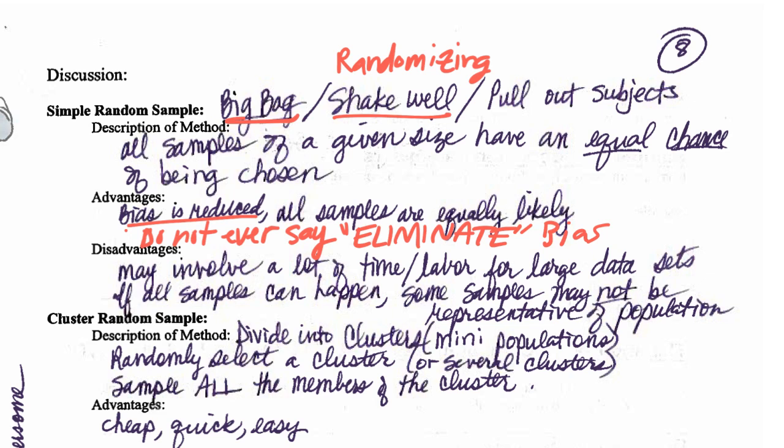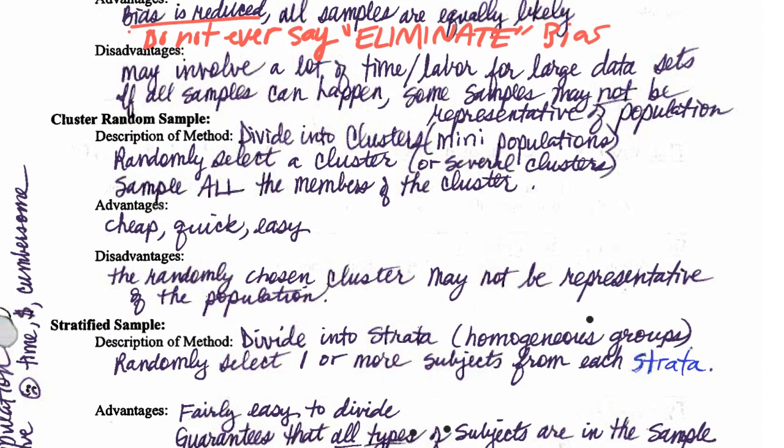So several years ago, there was a problem on the AP exam free response about 300 dogs and you were putting them into various treatment groups. And so it was perfectly fine to say on the AP test, you're going to put all 300 dogs into a big bag, shake well and pull out 100 dogs to go into that treatment and 100 dogs to go in the second treatment and the last 100 to go in the third treatment. That's fine because they understand that you understand the process of a simple random sample.